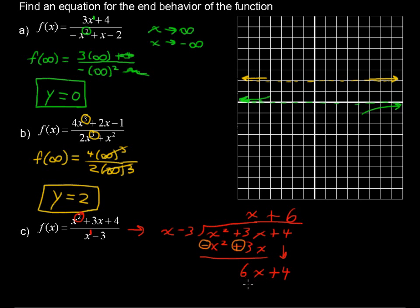So 6 times 3. 6 times x is 6x. 6 times negative 3 is negative 18. And I'm going to do this again. Change the signs. Add. We get 22. And that's plus 22 over the divisor, over the denominator. So we get x plus 6 plus 22 over x minus 3.